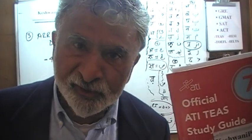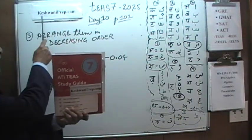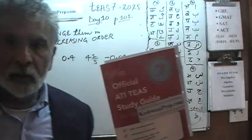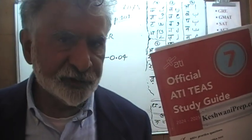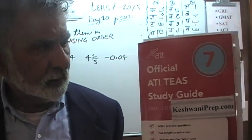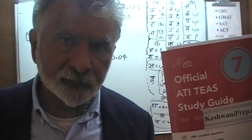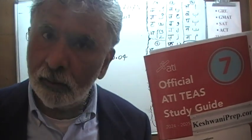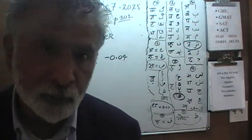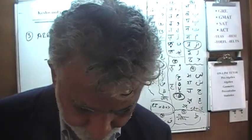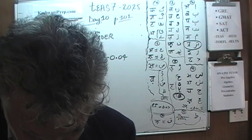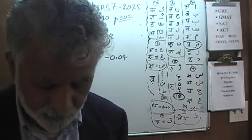Hello, my name is Keshwani, that's K-E-S-H-W-A-N-I. We are here because we want to prepare for TEAS. We have been solving TEAS math problems out of this book, the official study guide version 7, 2025. If you do not own this book already, purchase one immediately, you are going to need it. Always make sure that this book is in front of you when we are working together. Today is our lesson number 10. We are on page number 101 and we are going to pick up from problem number 3. There are three problems here, 3, 4 and 5, that's what we are going to do right now.